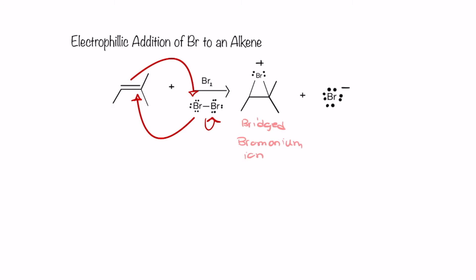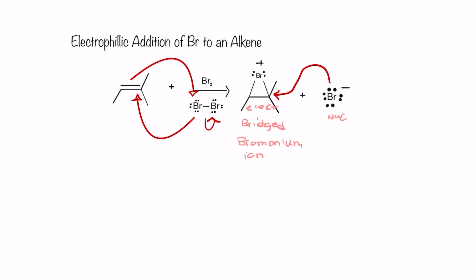We know that nucleophilic things tend to be negatively charged and electrophilic things tend to be positively charged. So the bromide ion is going to act as our nucleophile, while the bromonium is going to act as our electrophile. So we have to draw an arrow showing that this bromide ion is going to connect to one of these two carbons. But which carbon? Is it going to attach to the more substituted carbon or the less substituted carbon? We can't give it a fifth bond or else we'd break the octet rule, so we have to break the bond between that carbon and bromine.